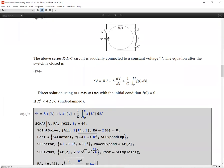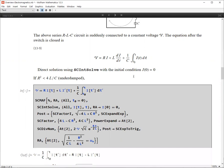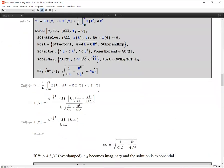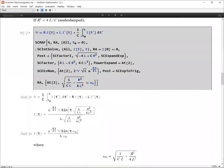But to solve this integral differential equation, you can use this function, SC IntDSolve, which is a package function, with the initial condition I(0) at time t equal to 0 is equal to 0. Well, for the underdamped case, when R is small such that R squared is less than 4L over C, then we have oscillation. So using this function IntDSolve, you can solve this integral differential equation. And this is the solution.